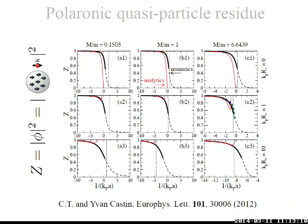For Z as a function of 1 over kF a: far on the right-hand side Z equals 0; as we approach the polaron-to-dimeron crossing point, Z starts to open; on the left-hand side where the polaron is the ground state, Z gets close to 1. There is also an analytic result valid far on the left-hand side. Experimental results from Innsbruck are in very good agreement with the numerics of the ansatz.